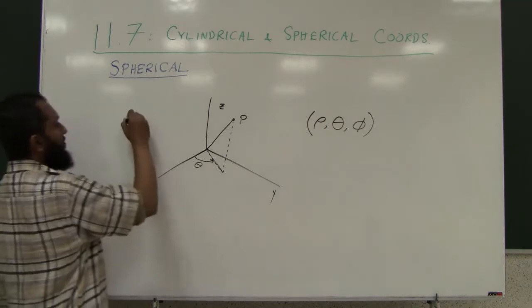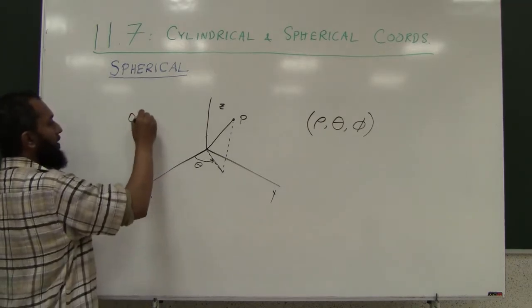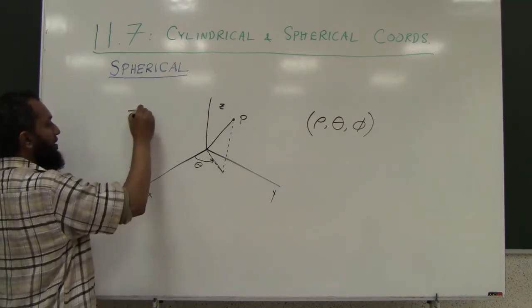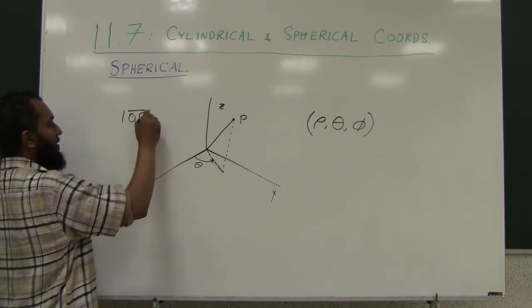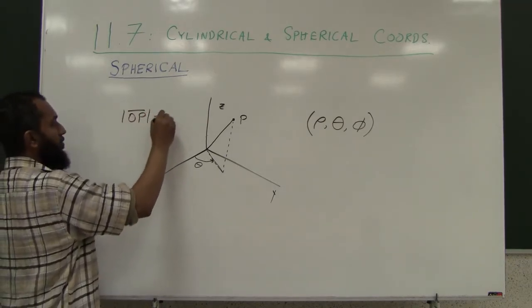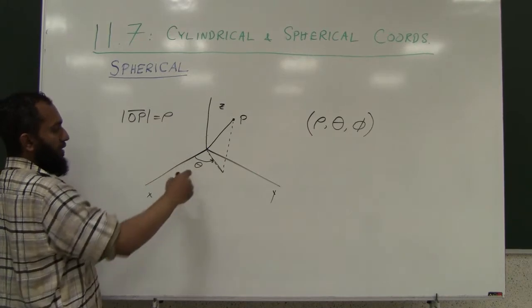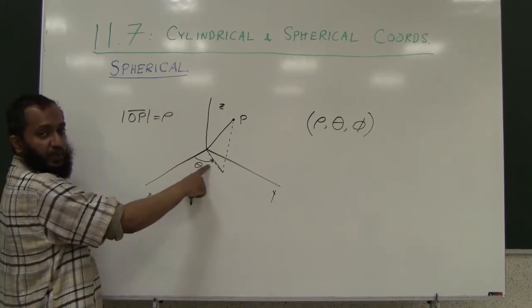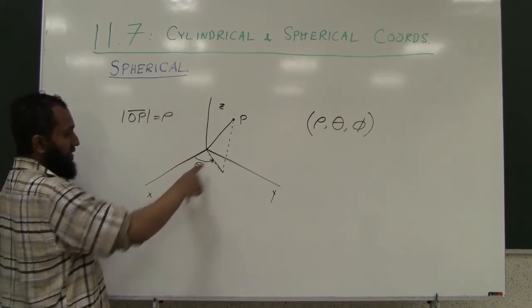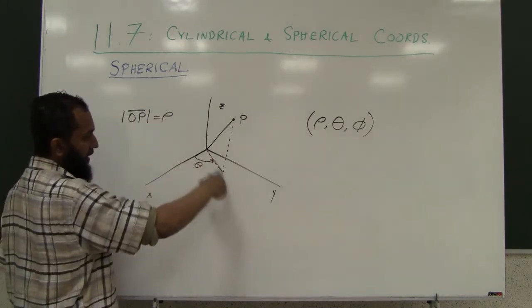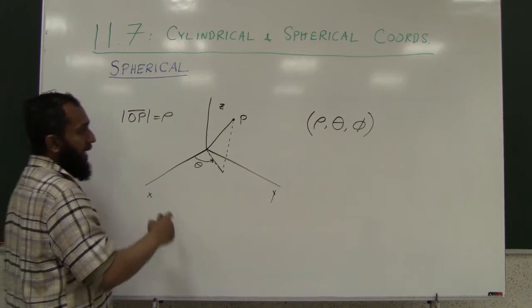So, the length of OP is rho. The angle with respect to the positive x-axis of the projection line is theta.